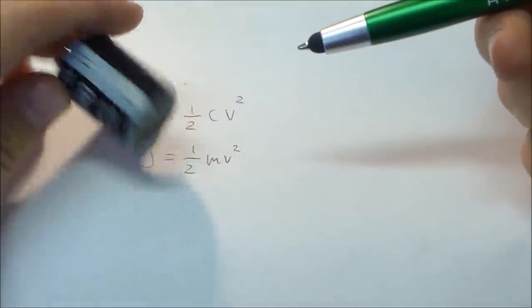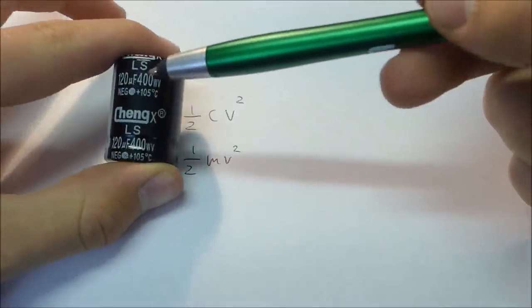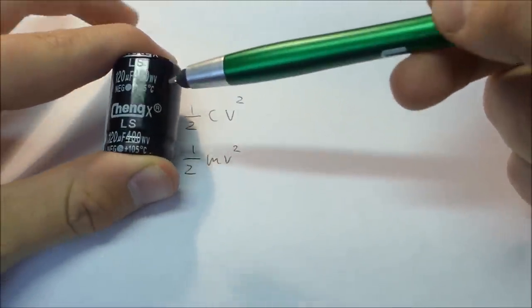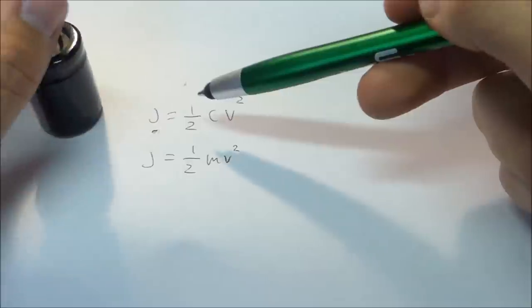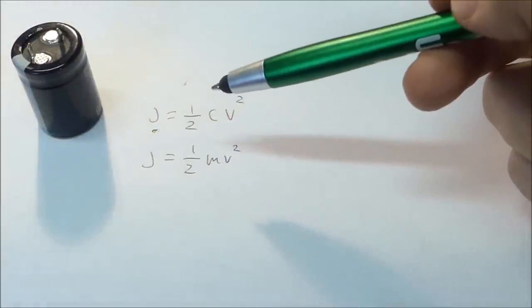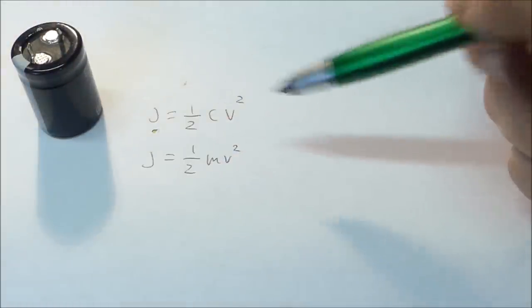With this in mind, we can use the two things that are stated on the capacitor, the capacitance and the voltage, to calculate the exact amount of joules that are in each capacitor and capacitor bank, which should be pretty cool.